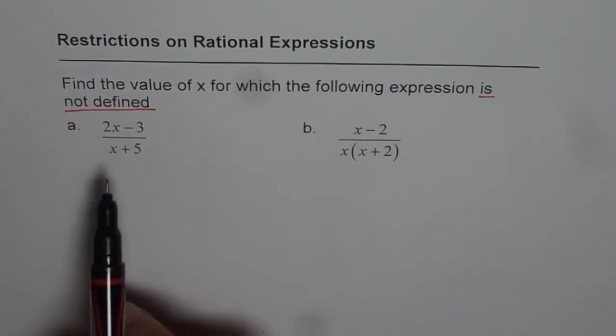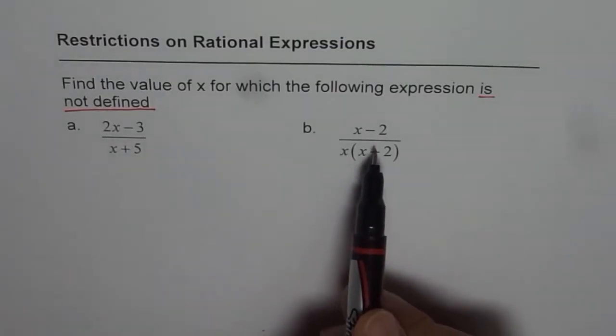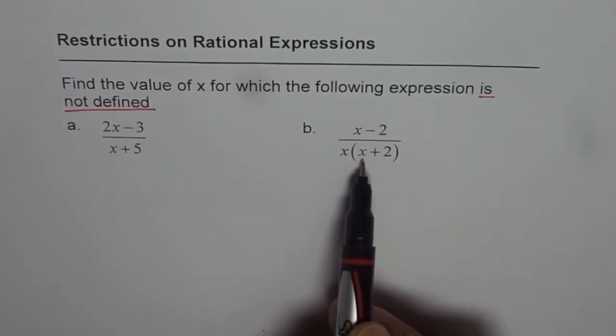We have two examples here. The first one is 2x-3 divided by x plus 5. The second one is x-2 divided by x times x plus 2.